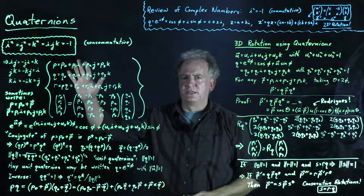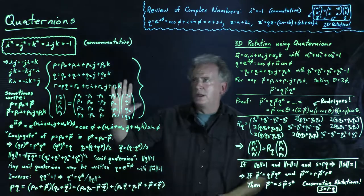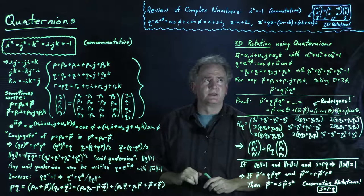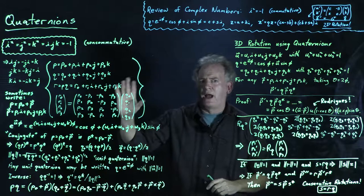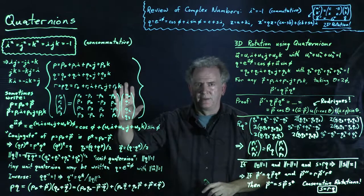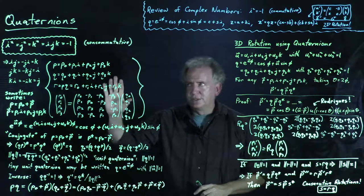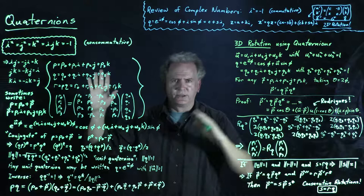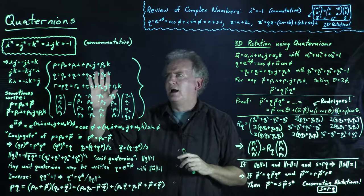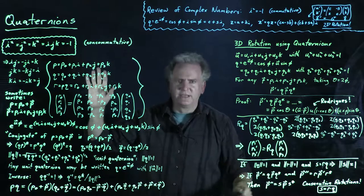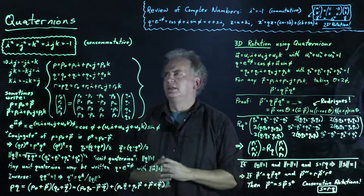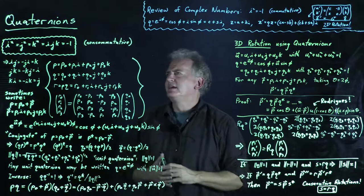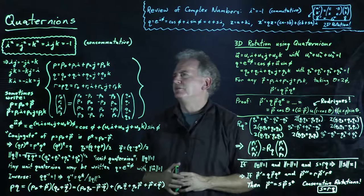What Hamilton tried to do — and it took considerable effort — was to figure out the correct generalization of complex numbers in order to do 3D rotations. It was a stroke of genius. He was going for a walk in the countryside, and legend has it he carved the key relations into Broom Bridge in Dublin, Ireland. If you ever go to Ireland, please check it out.